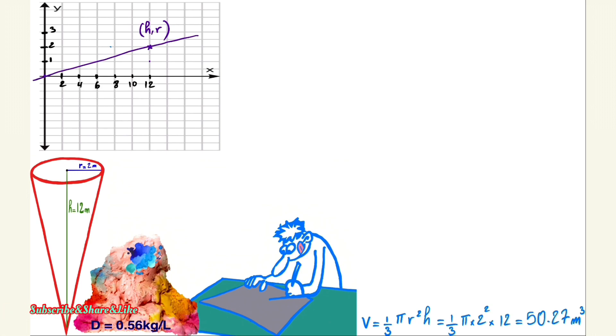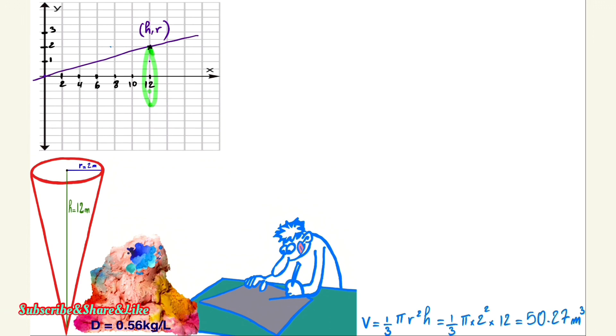When we rotate this line, it gives us the cone shape. Rotating it produces one side and the other side, giving us the full cone with radius r = 2 and height h = 12 — the same shape we started with. So let's derive the equation of this line.